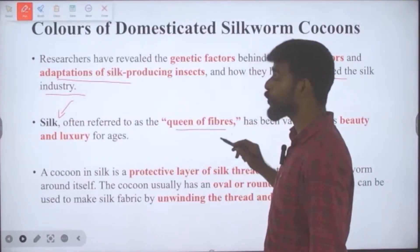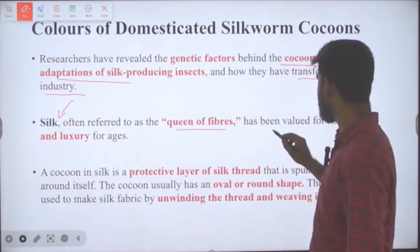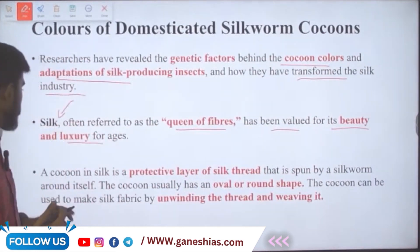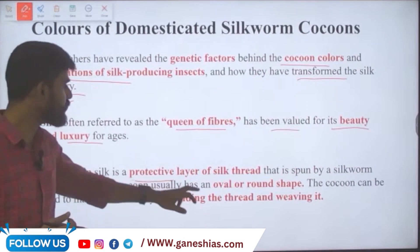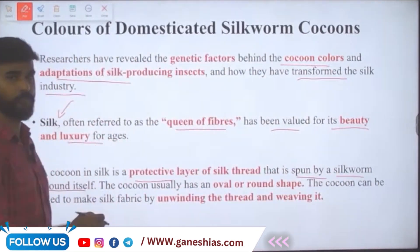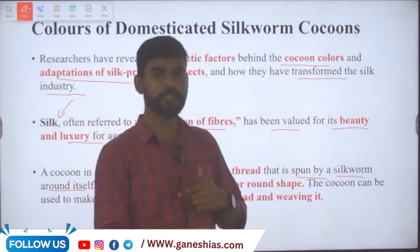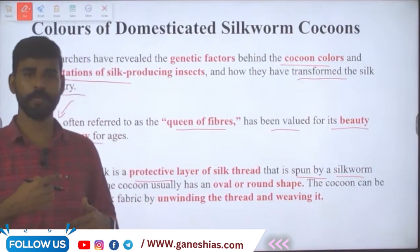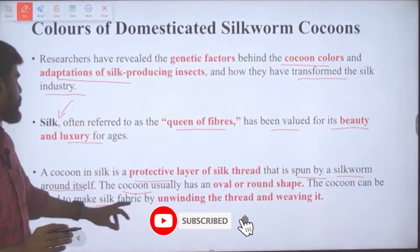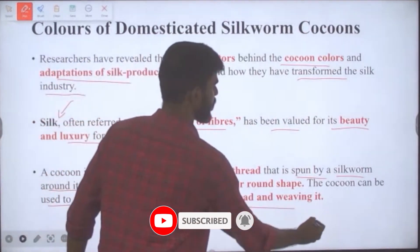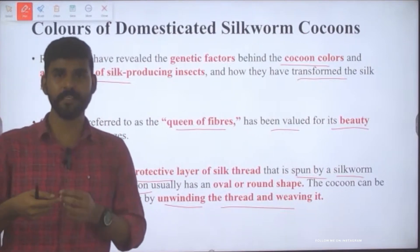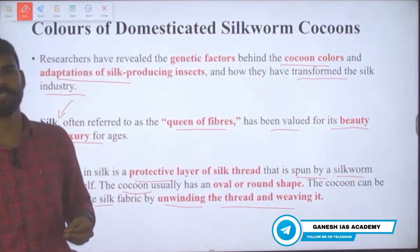Silk is often referred to as the queen of fibers and has been valued for its beauty and luxury for ages. A cocoon is a protective layer of silk thread spun by the silkworm around itself, usually oval or round in shape. To extract silk, the thread is unwound from the cocoon and then woven into fabric.